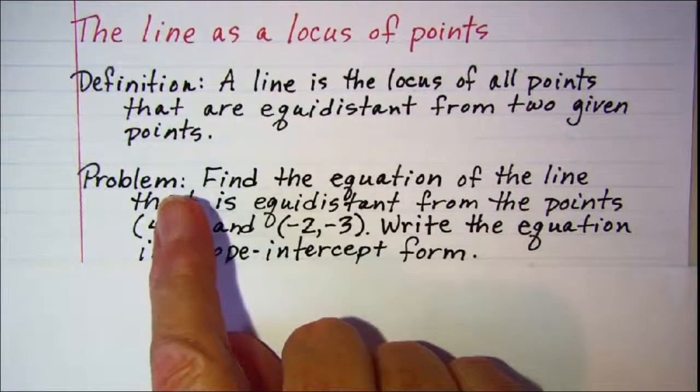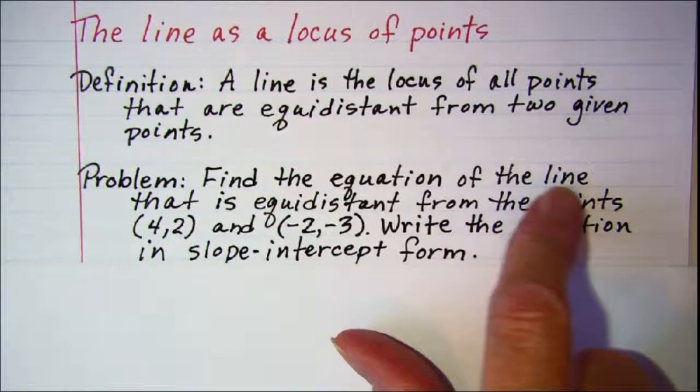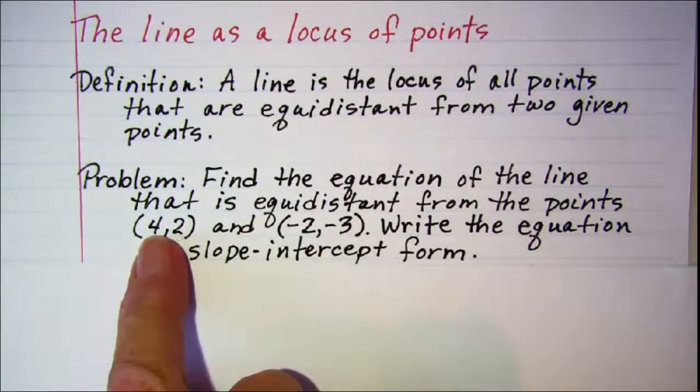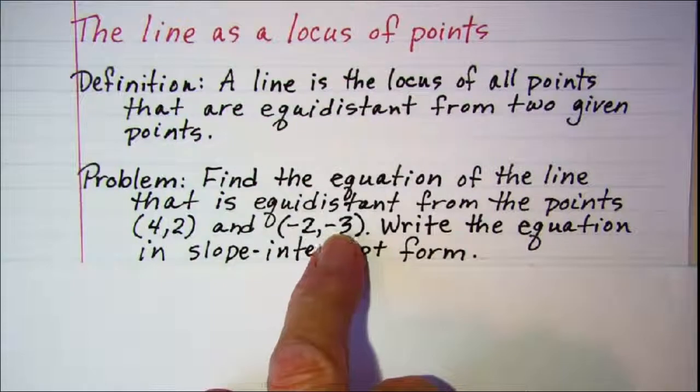The problem that we'll be working is to find the equation of the line that's equidistant from the points (4, 2) and (-2, -3).